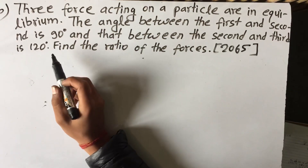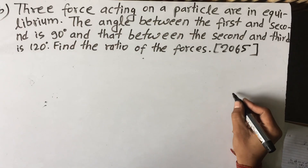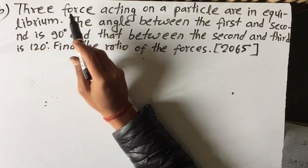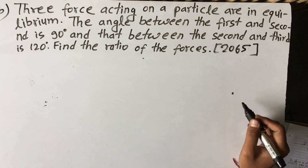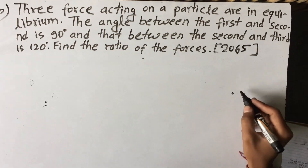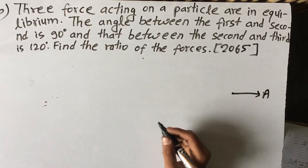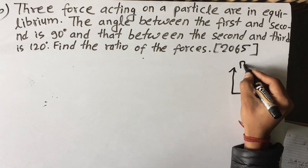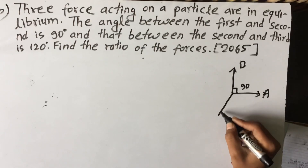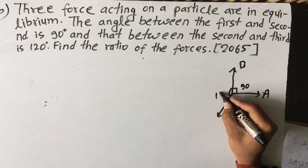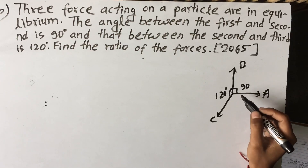I'm going to show you the force ratio. Now I'm going to show you the figure. These are three forces acting on a particle that are in equilibrium. The angle between the first force A and the second force B is 90 degrees, and the angle between B and C is 120 degrees.